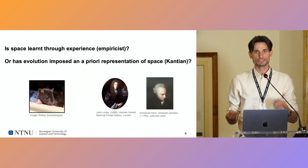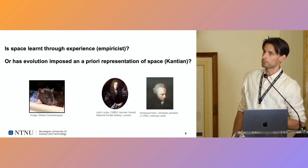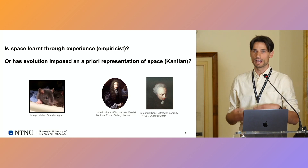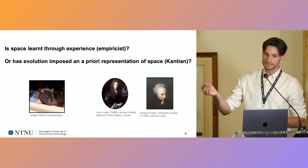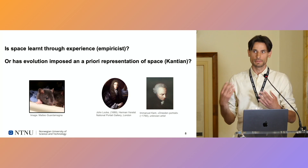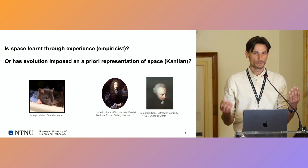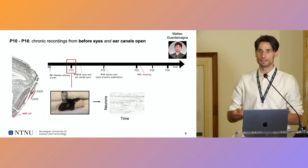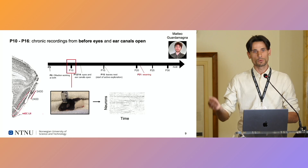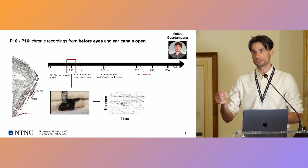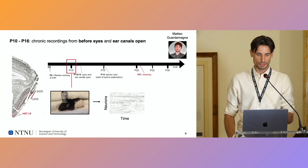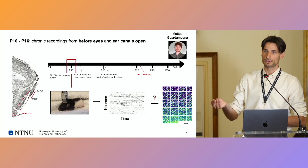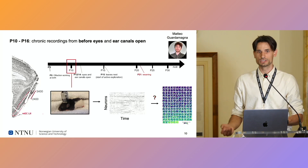What we're now trying to understand is: how is this representation formed? Is it through learning the environment and through active exploration? Or do we have an innate representation of space, formed through evolution? Matteo has made chronic recordings in rat pups, even before their eyes and ear canals open, so they can't really see or hear. Furthermore, they can't really move around, so we don't have an external covariate with which we can classify which are the grid cells.